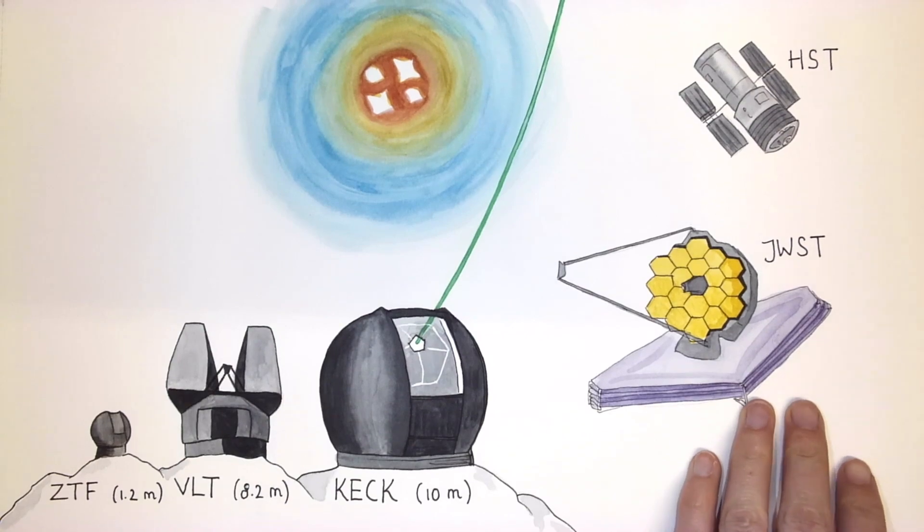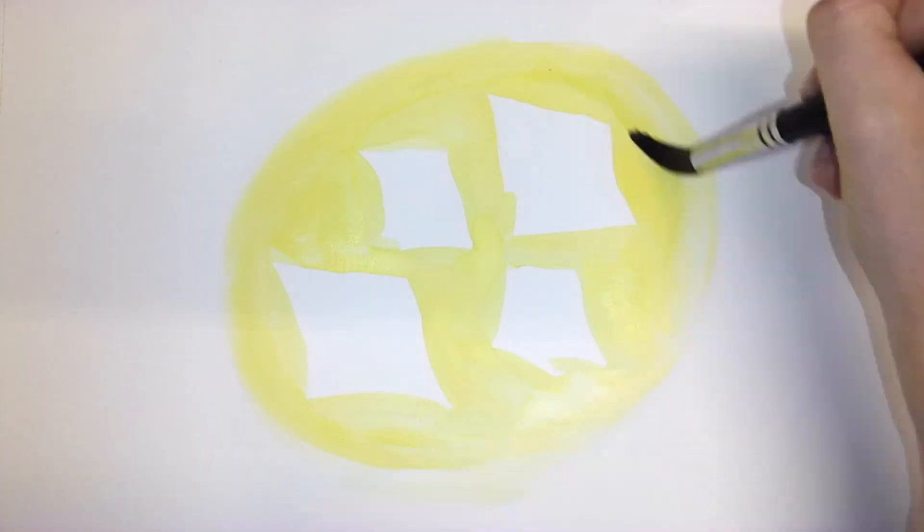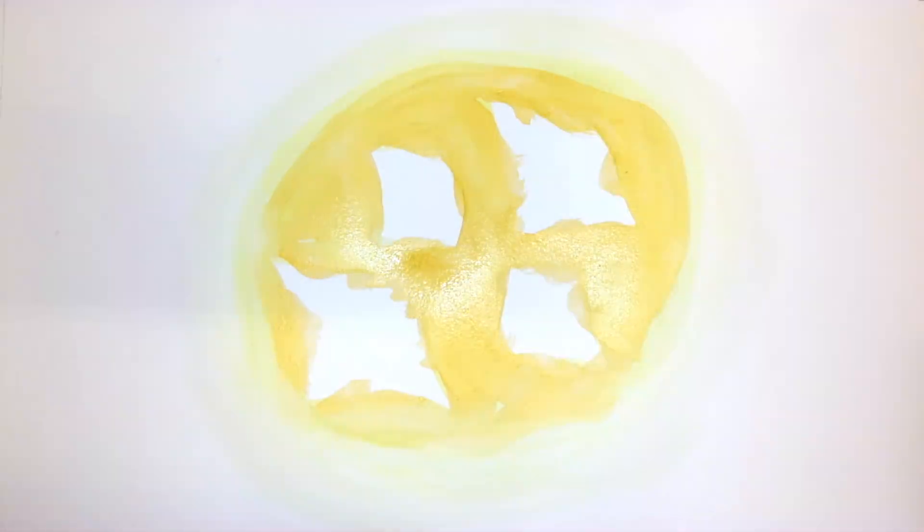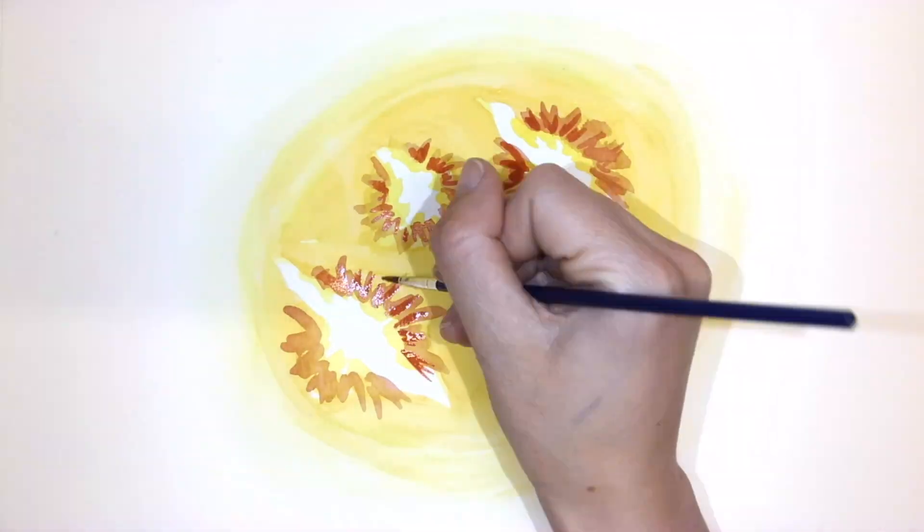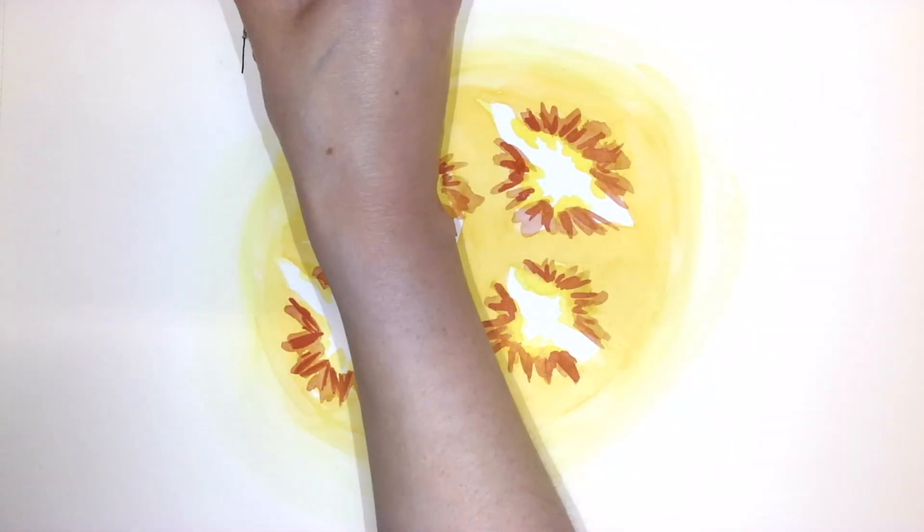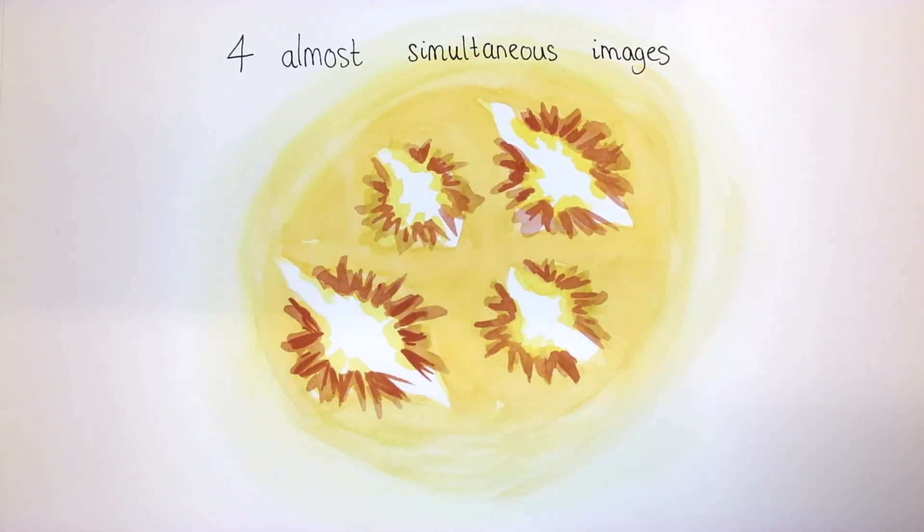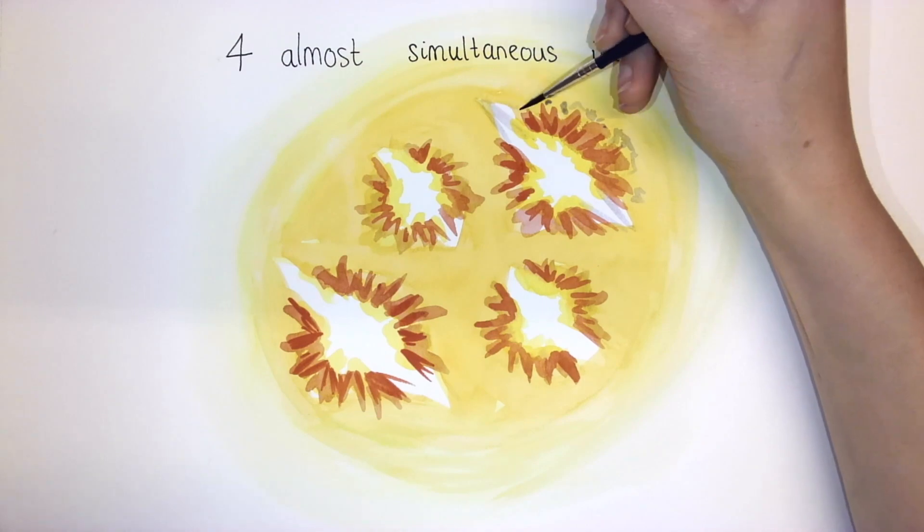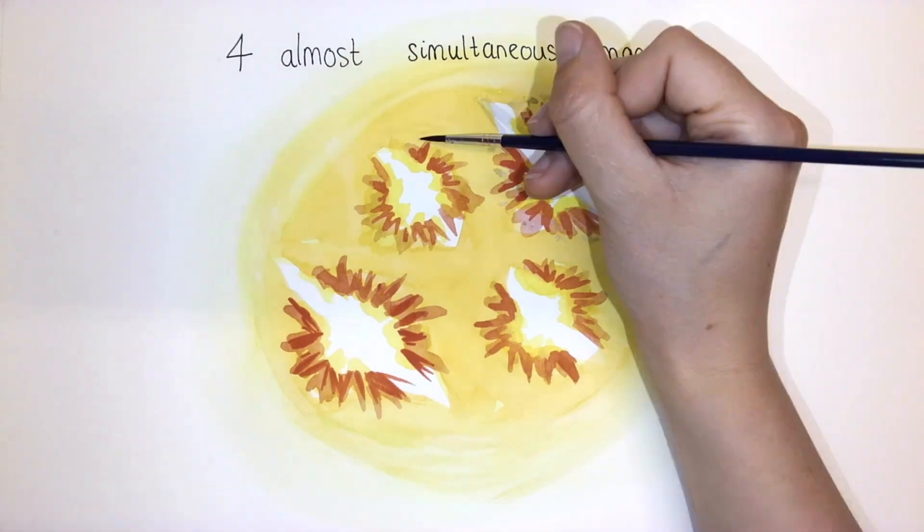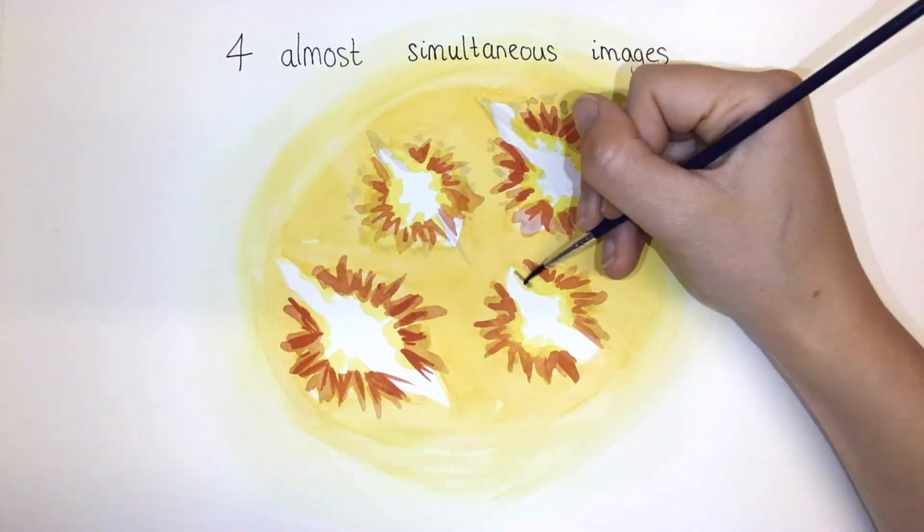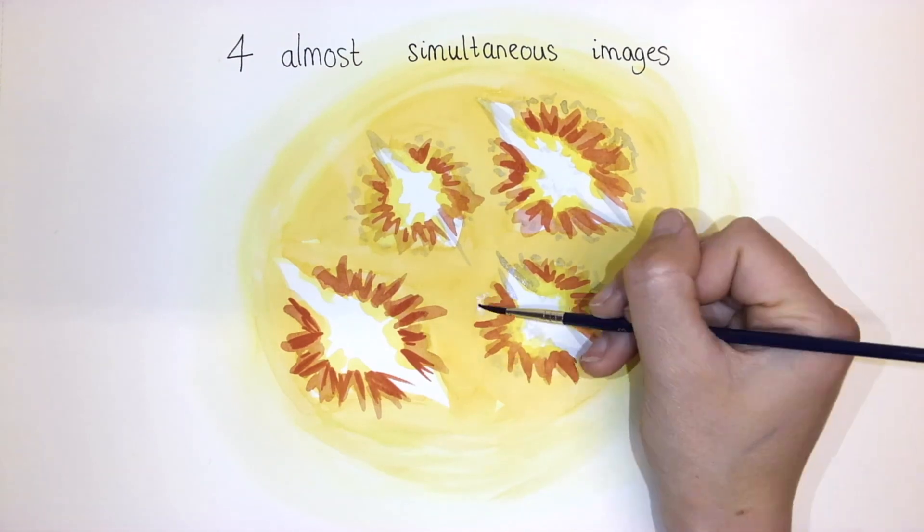So what did we learn about Supernova Zwicky through all these observations? The images formed by gravitational lensing generally don't all appear at the same time, because the light rays travel along different paths. For Supernova Zwicky, however, we saw that the four images appeared almost simultaneously. Even though the light from all of them traveled 4 billion years in different trajectories around the lens galaxy, the difference in arrival time at Earth was less than a day.